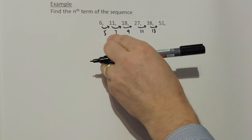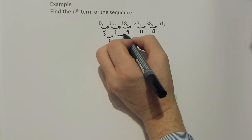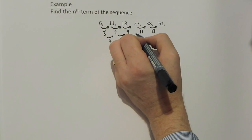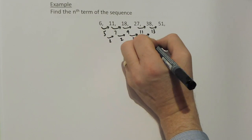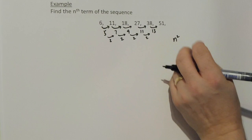So it tells me it's not a linear sequence. When I go on to the second difference, I can see that that is always going up by 2. So that tells me that it is something to do with n squared.